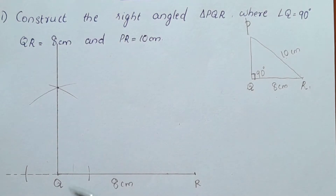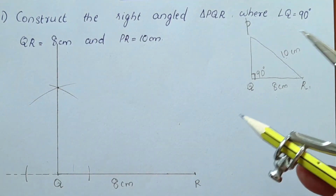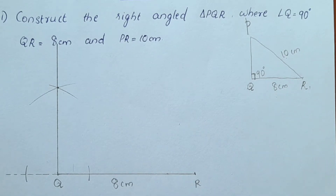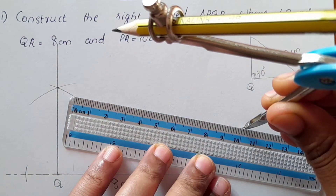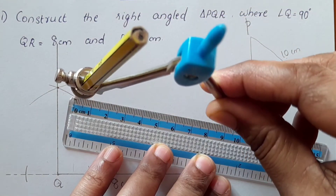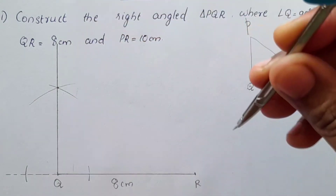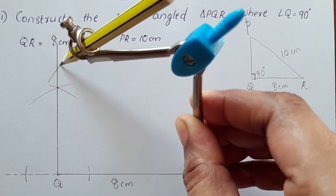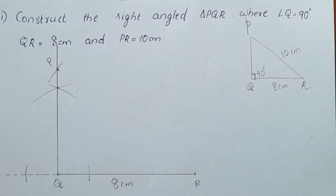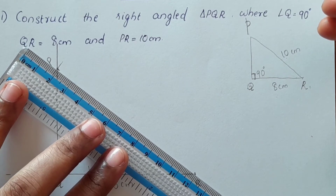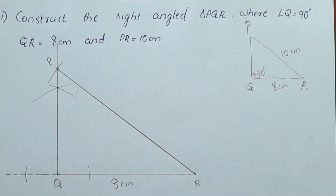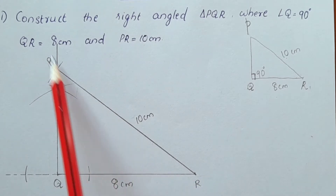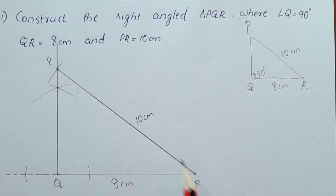We will put a line at the intersecting point and join at the intersecting point. The next measurement is PR equal to 10 cm. We will put a scale of 10 cm. The next point is P — we join P, Q, R and construct the right-angle triangle PQR with angle Q equal to 90 degrees.